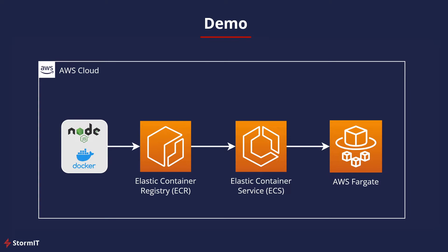So here we have our simplified diagram. I have my Node.js application in a Docker image, and we will create an Elastic Container Registry where we will store our image. Then we will load this into ECS where we will create a task with AWS Fargate to run our application. This is a serverless infrastructure — after we create everything, you don't have to manage any servers. Just provide your updated code and redeploy it in ECS.